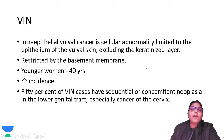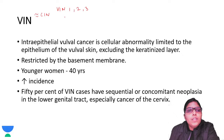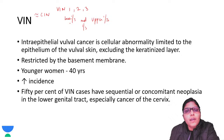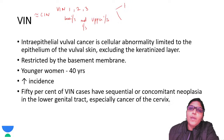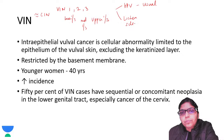VIN is similar to CIN, so it is also divided into VIN 1, 2, and 3 - depending on whether dysplasia is in the lower third, mid-third, or upper third of the epithelium, same as CIN. The etiology of VIN is of two types: one is HPV-related, known as the usual type of VIN (UVIN), and the other is seen in patients with lichen sclerosis, known as the differentiated type of VIN (DVIN).